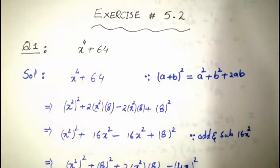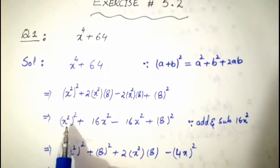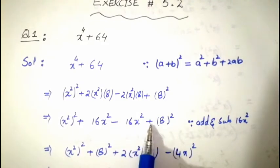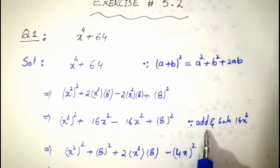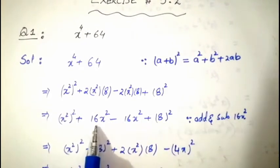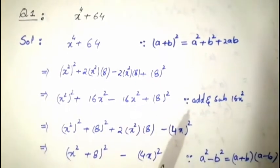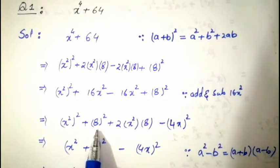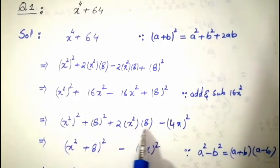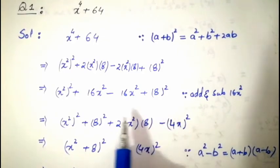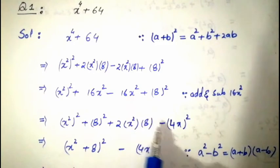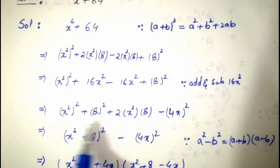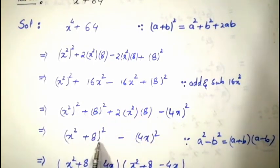So now we have: (x²)² + 16x² + 8² − 16x². We have added and subtracted 16x². The minus term, which is −16x², can be rewritten. Up to this point, the formula a² + b² + 2ab is formed, which we close as (a + b)², and the remaining term is −16x².